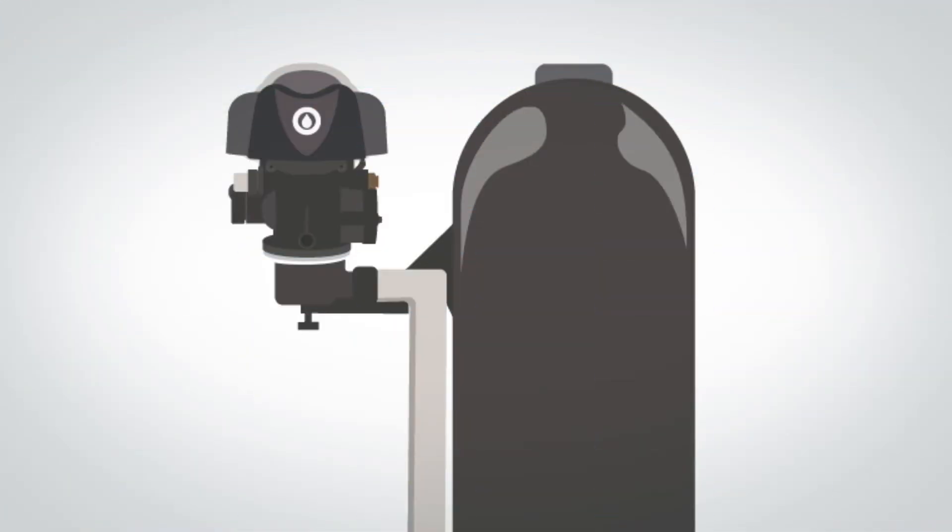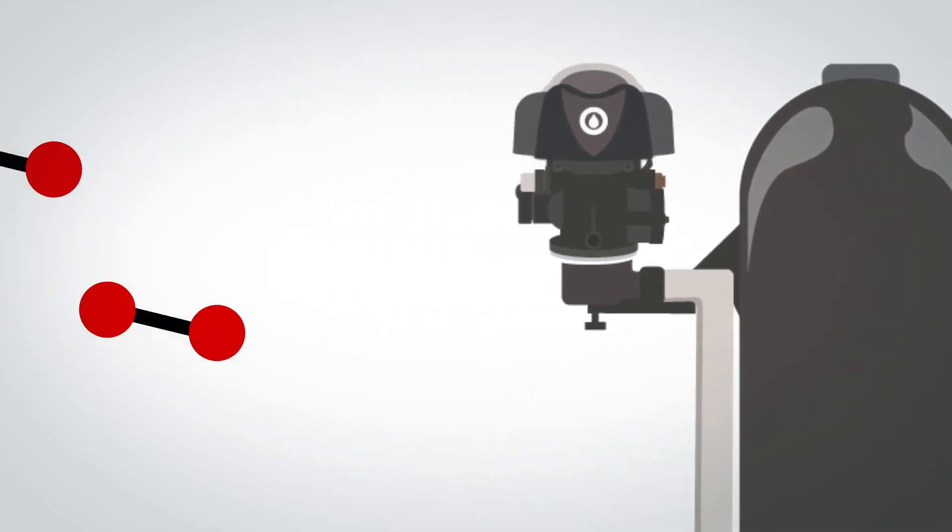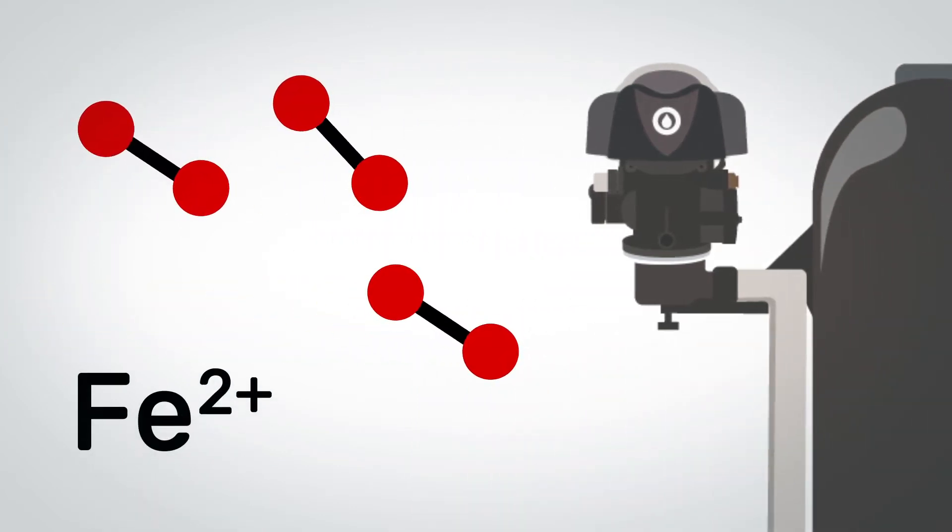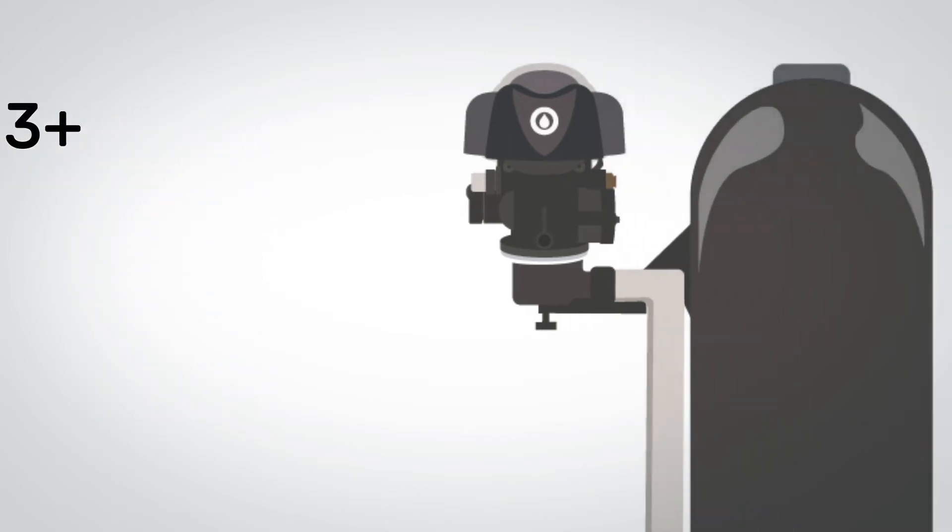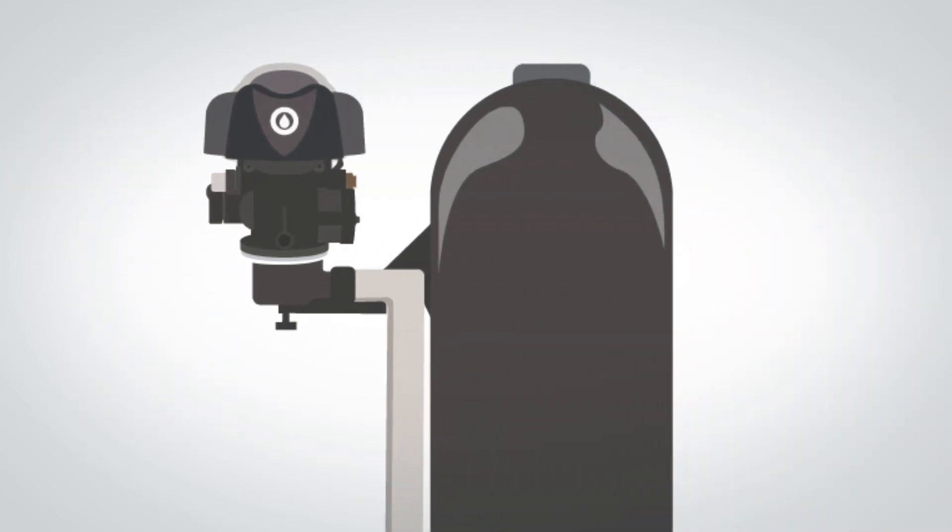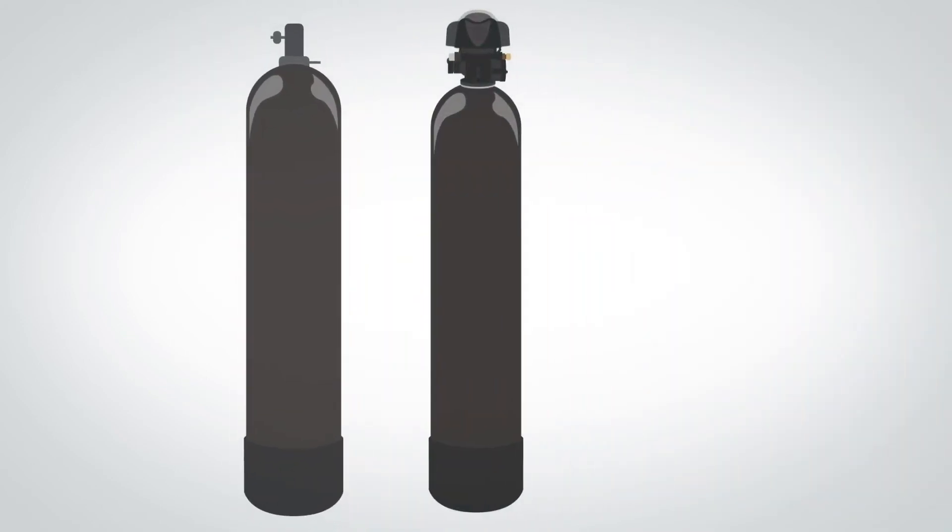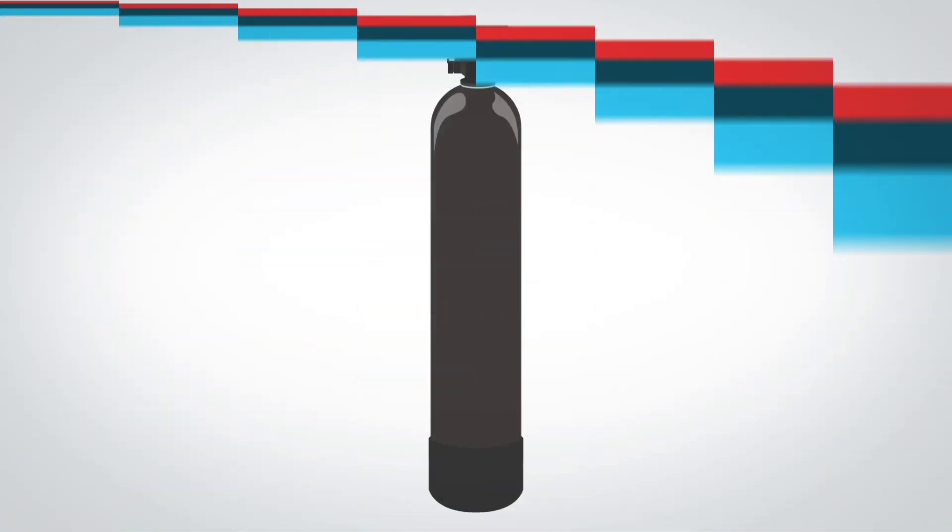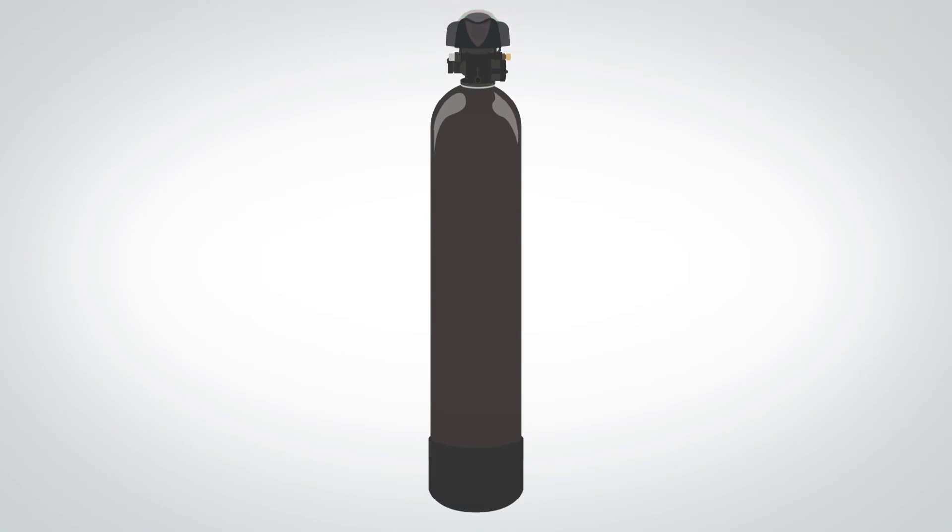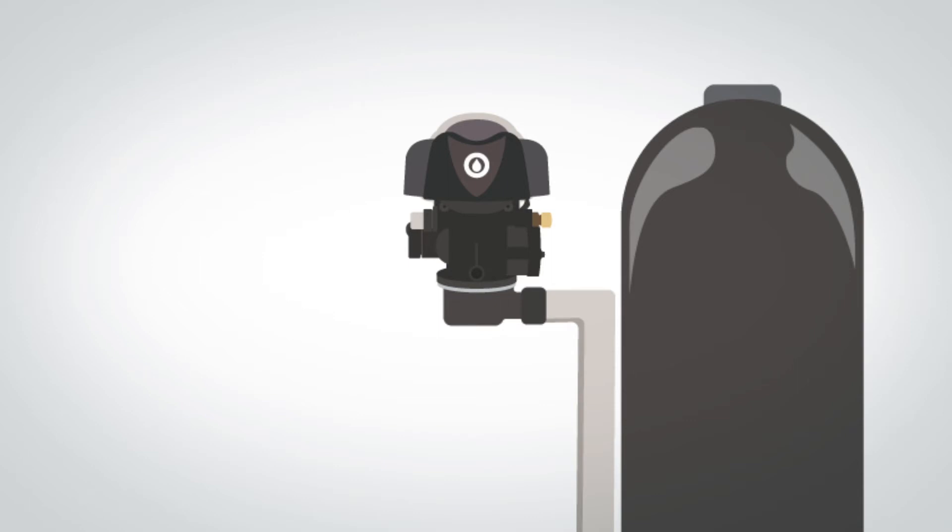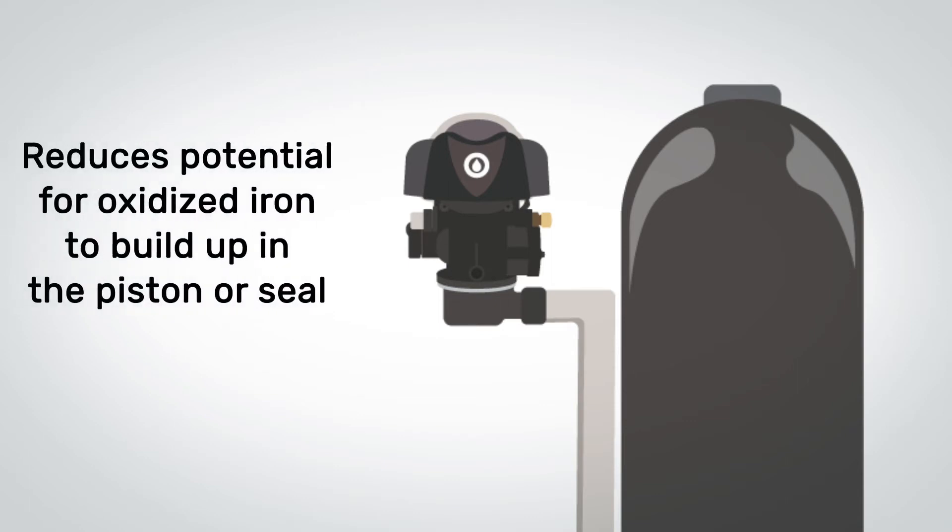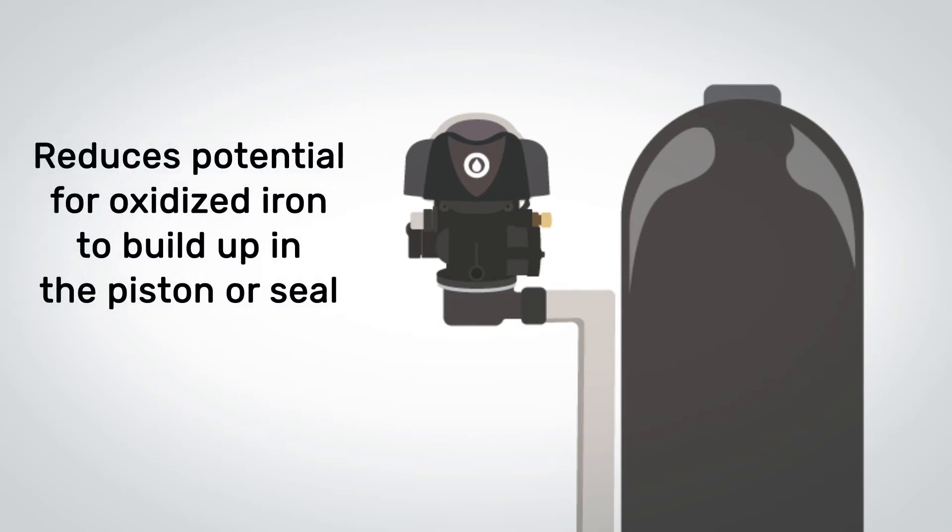The single tank aeration filter receives its name due to the fact that it uses air to convert clear ferrous iron into ferric iron so that it's able to be filtered out by the media bed, and it does this all in one tank as opposed to a system that would require separate tanks for aeration and filtration. While many manufacturers offer single tank aeration filters, only our system separates the control valve from the top of the tank, which reduces the potential for oxidized iron to build up in the piston and seals in the valve body.